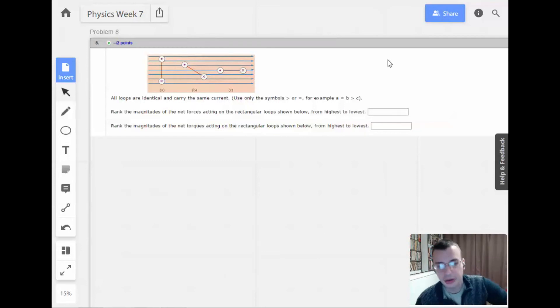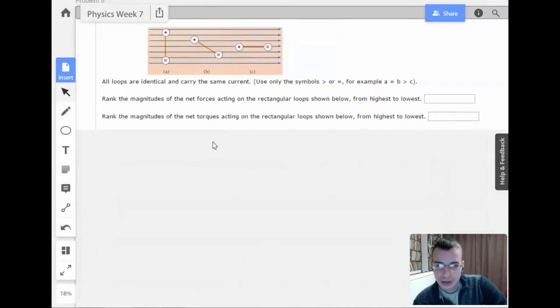Use only the symbols greater than or equal to. For example, a, okay, got it. So we don't use less than. Rank the magnitudes of the net forces acting on the rectangular loops shown below from highest to lowest. Rank the magnitudes of the net torques on the loops.